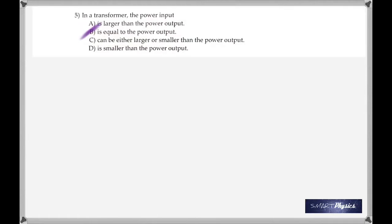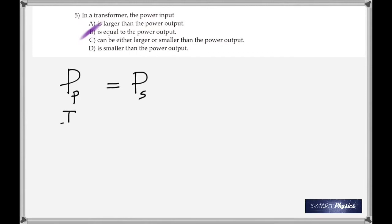In a transformer, the power input is equal to the power output — but of course that is true only in the case of an ideal transformer. The power in the primary is equal to the power in the secondary. Since electrical power is given by the product of current and voltage, IP times VP is equal to IS times VS.